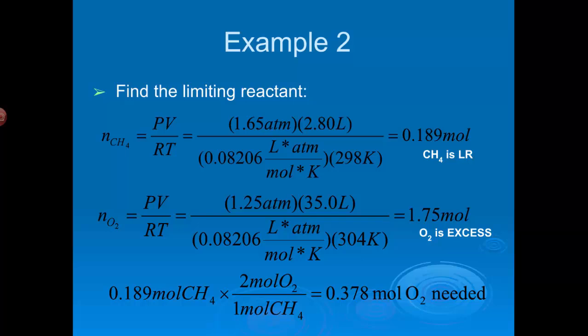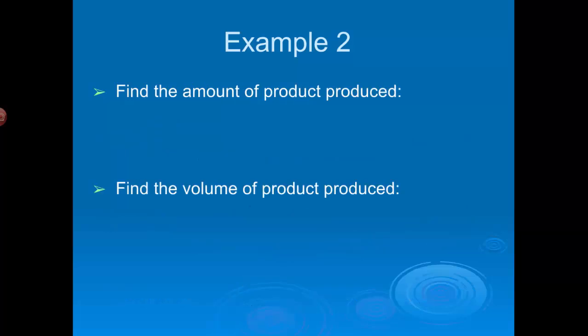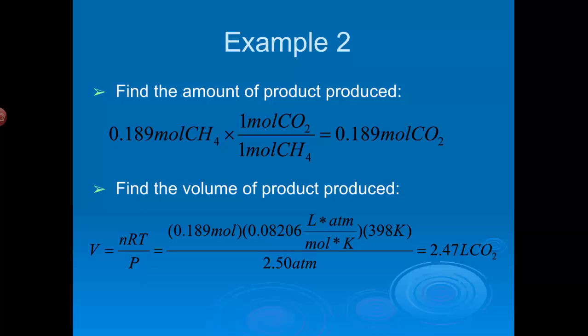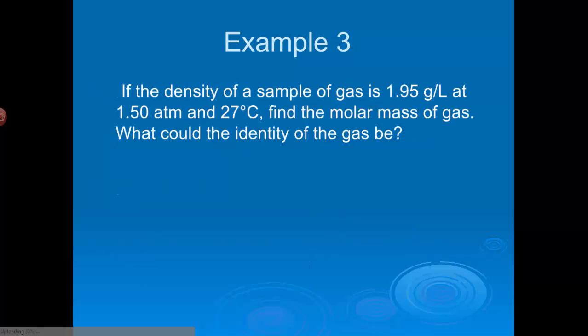So, now that we know that methane is the limiting reactant, we begin with that. We're going to find the amount of product produced. Okay? Well, it's 1 mole of CO2 for every 1 mole of methane, so we produce 0.189 moles of CO2. Now, we want to find the volume of that product. Now, we need to use the other conditions that we're given. Okay? Volume is equal to moles times R times T over pressure. So, moles we just solved for just above there. R is R. Temperature in kelvins and pressure on the bottom. We get 2.47 liters of CO2. So, how did you do on that one? Did you get it?